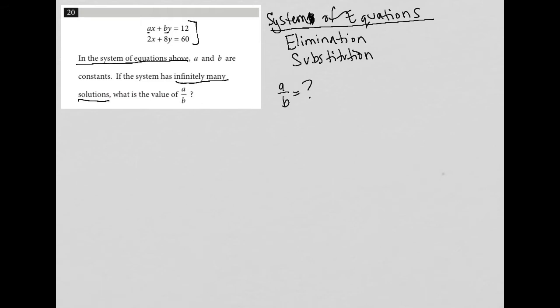So here's the trick. Infinitely many solutions. Well, when does a system of equations have infinitely many solutions? The only time that happens is when the two equations are equivalent.